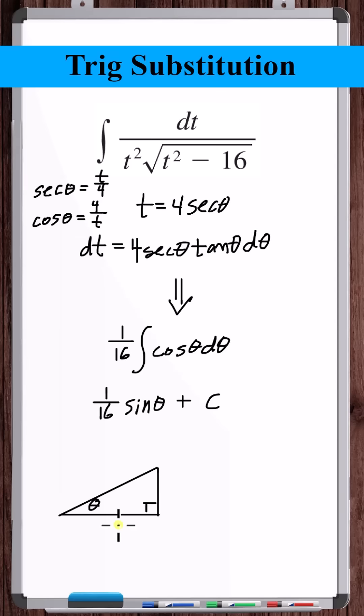Cosine theta is adjacent over hypotenuse. So using the Pythagorean theorem, the length of this side is the square root of t squared minus 4 squared, or 16.